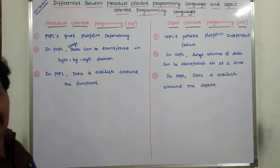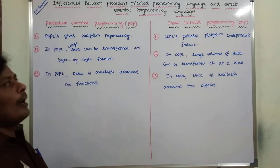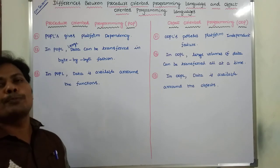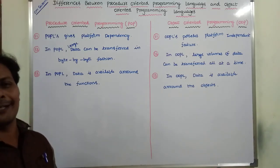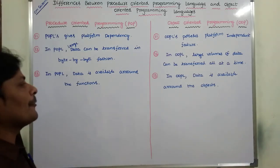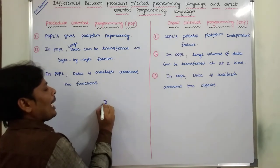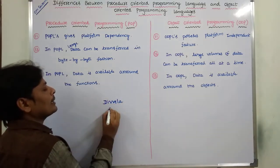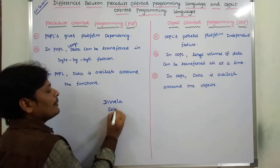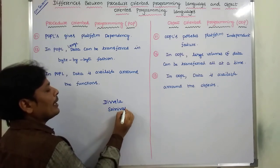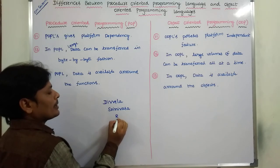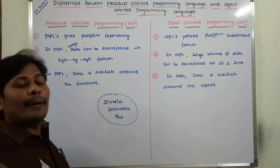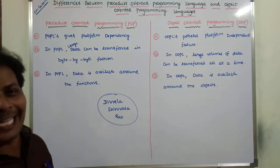These are the main 13 differences between Procedure Oriented Programming Language and Object Oriented Programming Language. Thank you for watching this video. If you like this video, please share it with your friends and classmates, subscribe to my channel, and please suggest your comments to improve my channel.